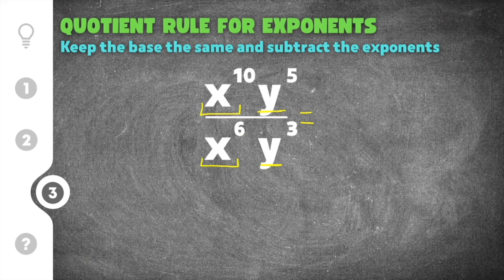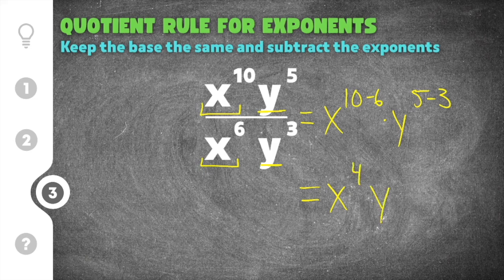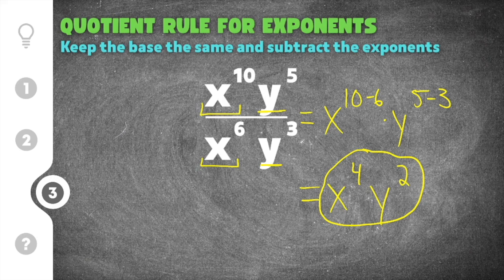The first part is to rewrite the base of x and the exponents that we're going to be subtracting for x, which are 10 and 6. So we're going to say x to the 10 minus 6, and that's going to be times y to the two exponents that the y has, which is 5 minus 3. Remember, we're subtracting because that's how you use the quotient rule. Then we simplify: 10 minus 6 is 4, and 5 minus 3 is 2. Our final solution is x to the 4th, y to the 2nd power. You can't simplify this any farther because these are not like terms — x and y are separate bases, so you can only simplify exponential terms that have the same base together.